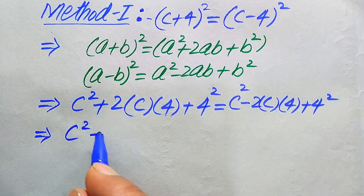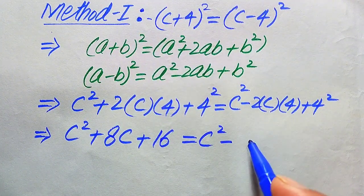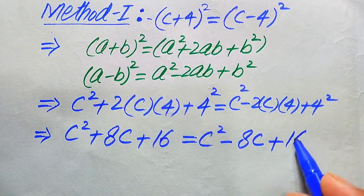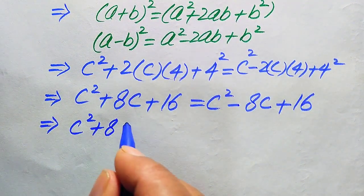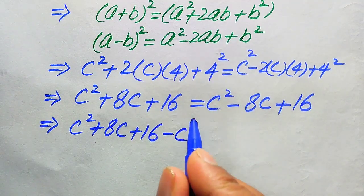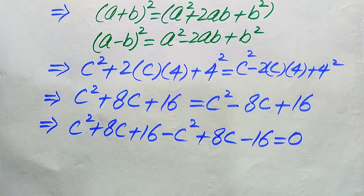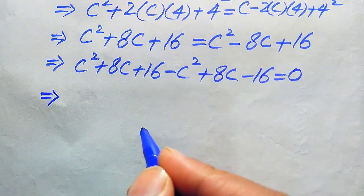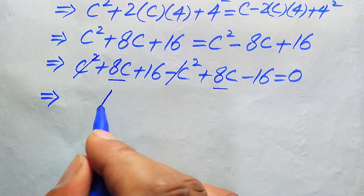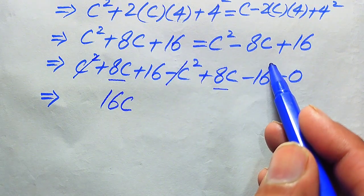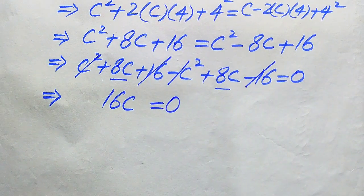Simplifying, we get c² + 8c + 16 = c² − 8c + 16. Moving all terms to the left side: c² + 8c + 16 − c² + 8c − 16 = 0. The c² terms cancel, the 16 terms cancel, and we obtain 16c = 0.